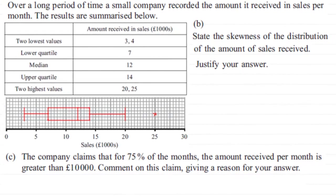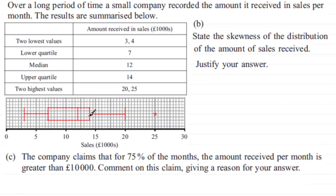For the remaining two parts of this question, we've got to first state the skewness of the distribution of the amount of sales received and justify our answer. Looking at the box plot drawn in the first part, you can see directly from the widths of the two sections that the section from the lower quartile to the median is a lot wider than the section between the median and the upper quartile.